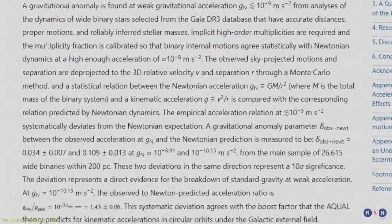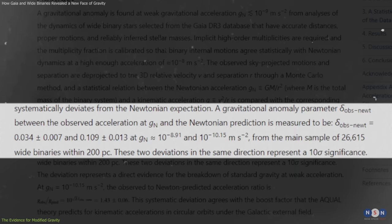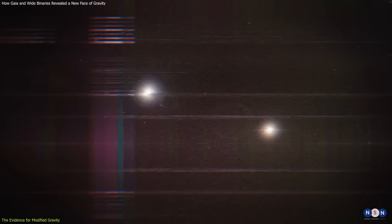This means that there is only a 1 in 3.5 million chance that this result is due to random fluctuations. The study also found that for accelerations higher than about 10 nanometers per second squared, the observed acceleration agrees well with the Newton-Einstein prediction.